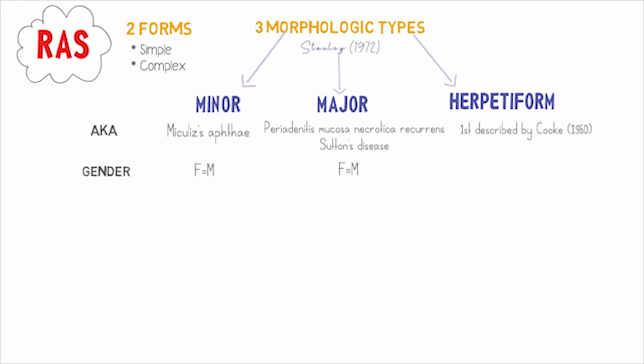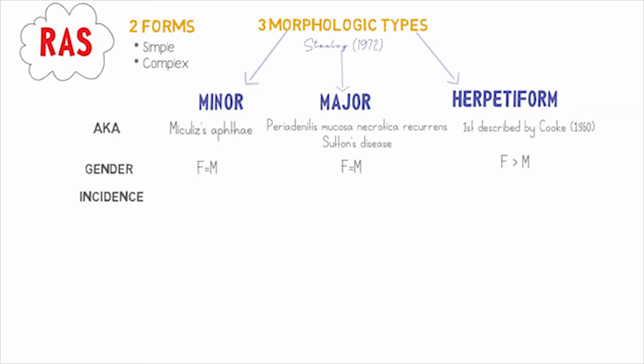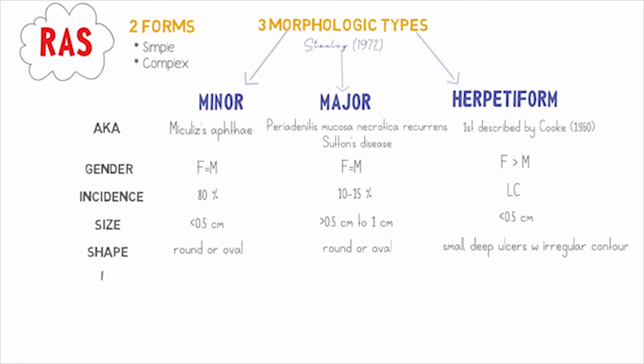The herpetiform type is somewhat more frequently seen in females. Nearly 80 percent of people are affected by the minor form, 10 to 15 percent represent the major form, and herpetiform RAS is less commonly seen. In terms of size, minor RAS measures less than 0.5 centimeters; major RAS ranges from 0.5 to 1 centimeter; herpetiform ulcers are usually smaller than 0.5 centimeters. Minor and major RAS are round or oval in shape, whereas herpetiform ulcers are small clusters, deeper, and usually have an irregular contour.